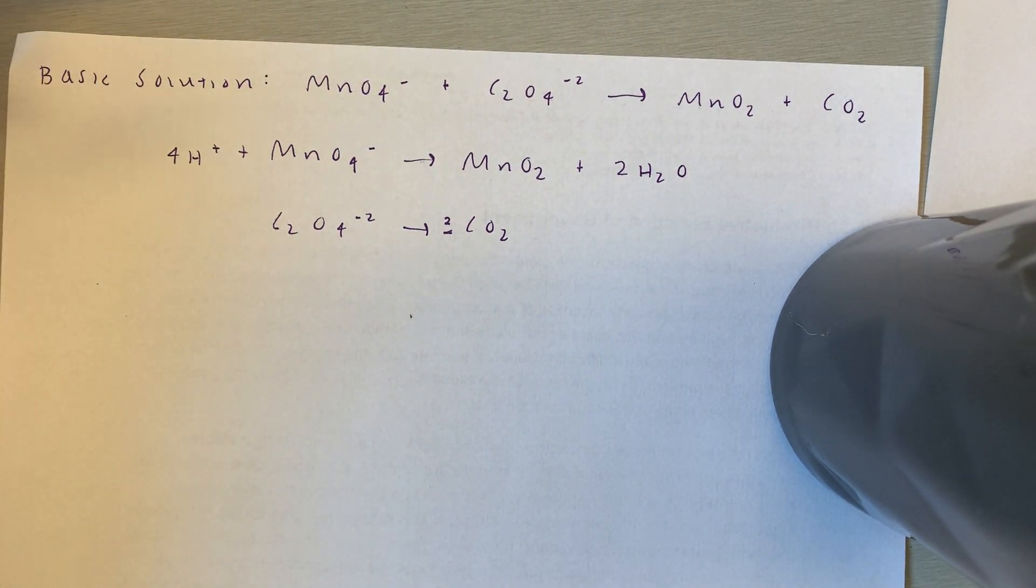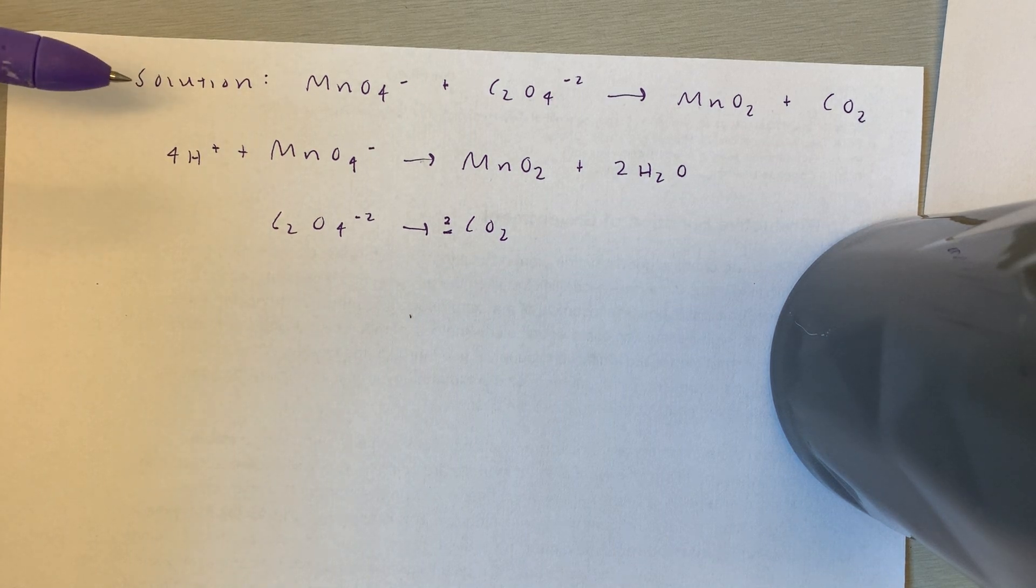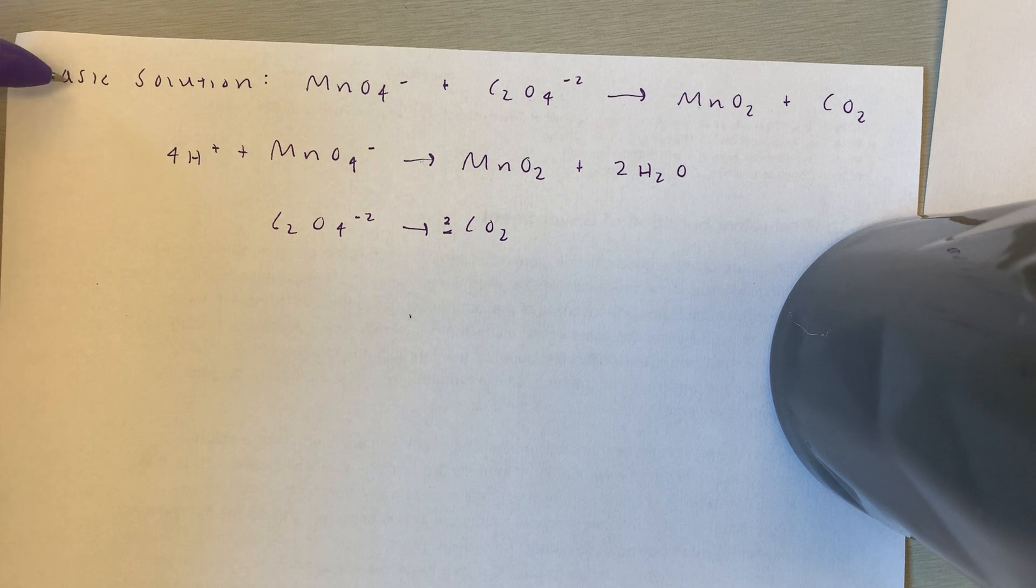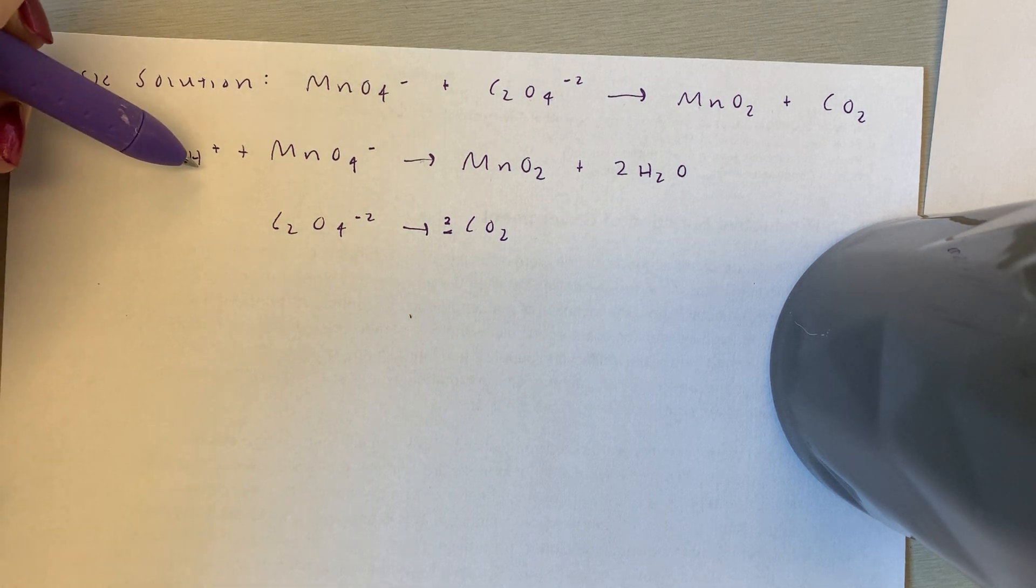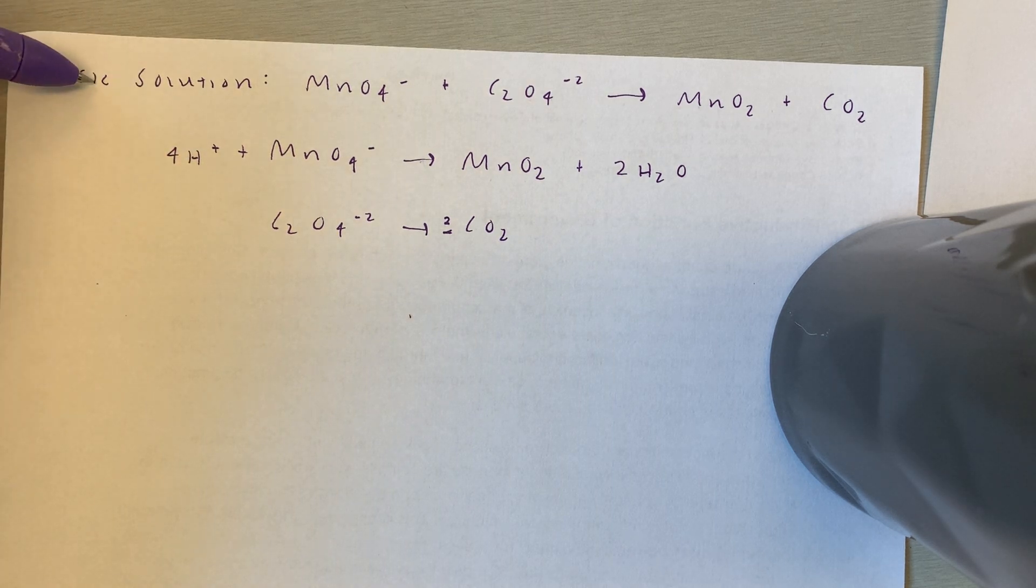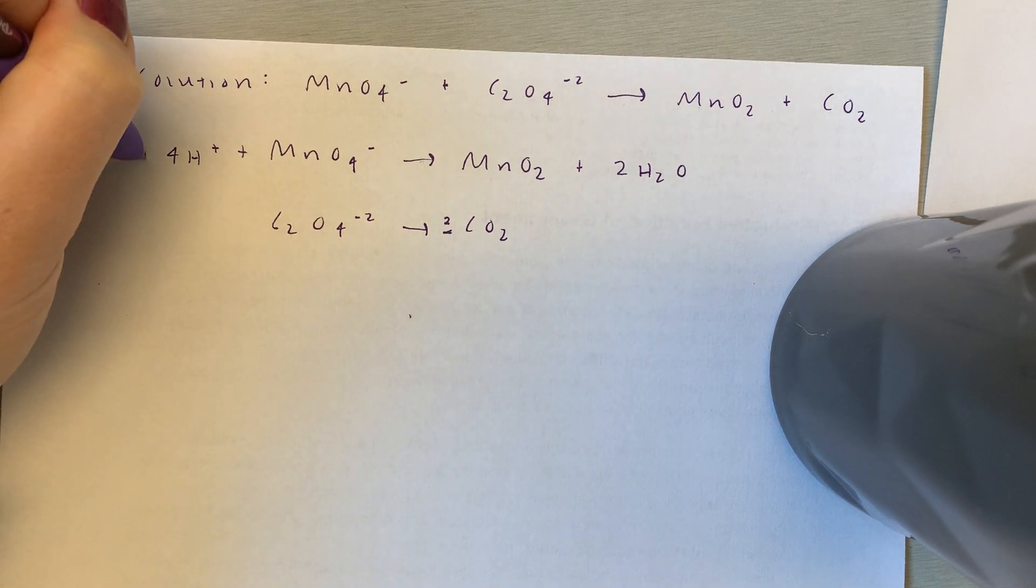But this is where we stop and we go into what happens when you're balancing in basic solution versus acidic solution. So with acidic, in the last video, you add four hydrogen ions and you're all good. However, since this is in basic solution, when water dissolves, we get hydrogen ion and hydroxide ion. So since this is in basic, we can't just leave the hydrogen ion here. We have to add hydroxide ions.